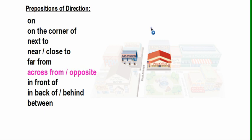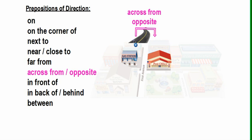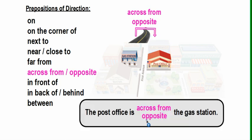The next one is 'across from' or 'opposite.' When we use 'across from' or 'opposite,' we are talking about something on the other side of a road or a street. For example, the post office is across from the gas station, or the post office is opposite the gas station. 'Across from' and 'opposite' indicate something on the other side of the street.